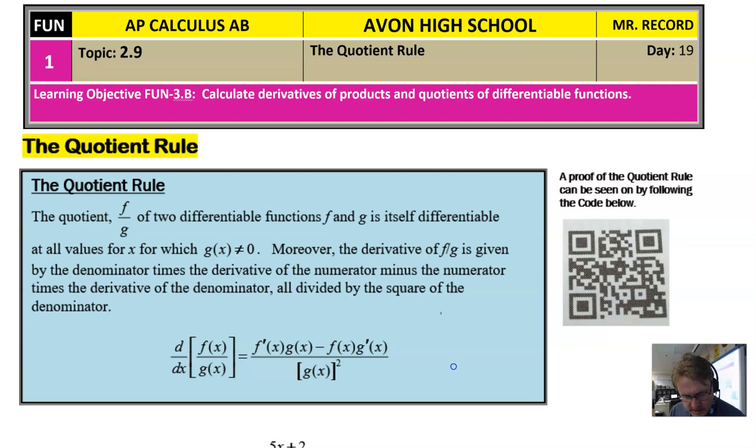Number one, there is a minus sign right here instead of the plus sign. And the second thing that's definitely different is the fact that we have over a g of x squared.